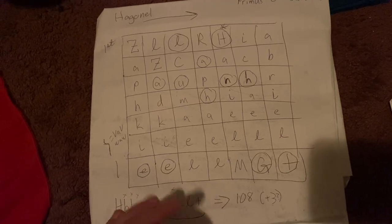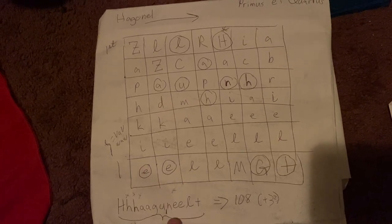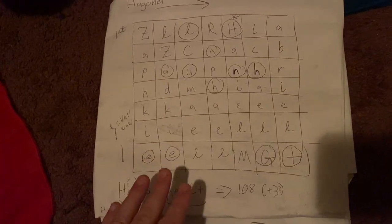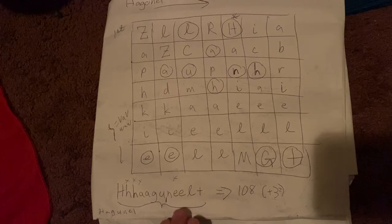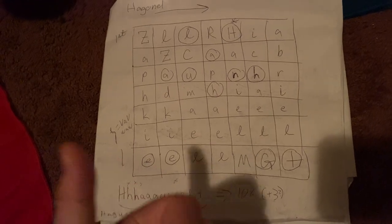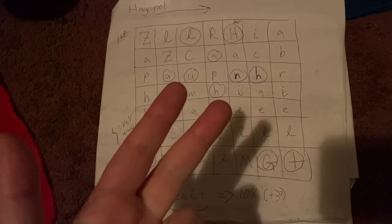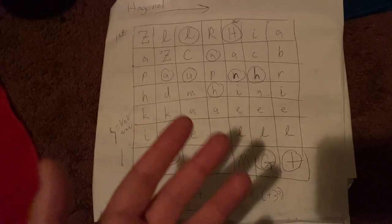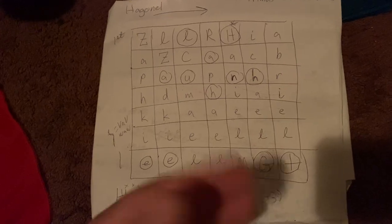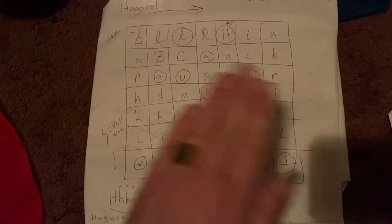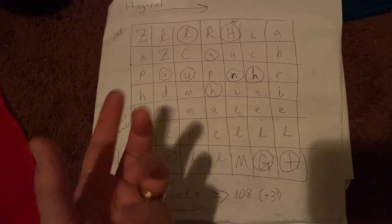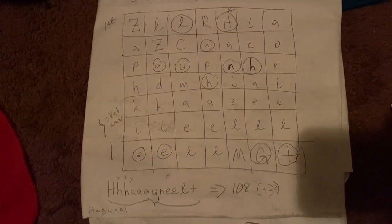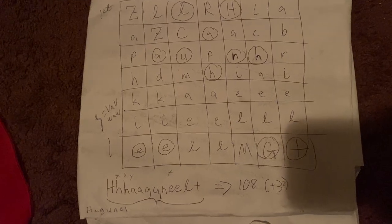All of Enochian is related to itself, okay? Just bear that in mind. If you're taking the original transmission, every single piece, whether it be the Heptarchy, the Aethers, the Watchtowers, or the Holy Table, all of that, or the Seals, all of that, all of it is like this hyper-complicated thing that continuously refers to itself, but also directly corresponds to reality.